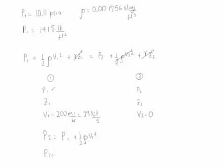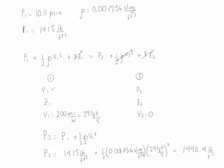We get the value, we get P2 is going to be P1 which is 1415 pounds per square feet plus one half the density which is 0.001756 slugs per feet cubed times the velocity squared so it's 293 feet per second squared. This value is going to be equal to 1490.4 pounds per feet squared.